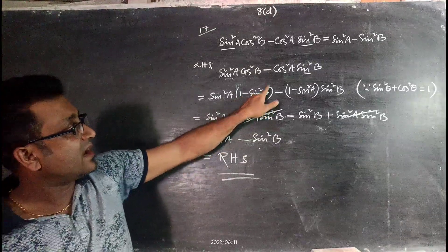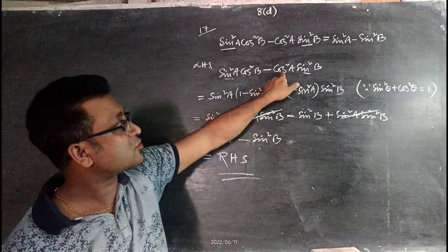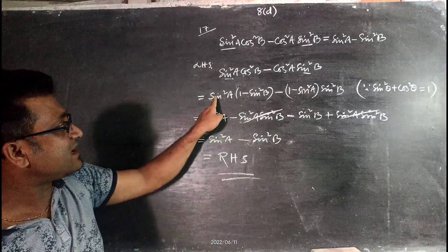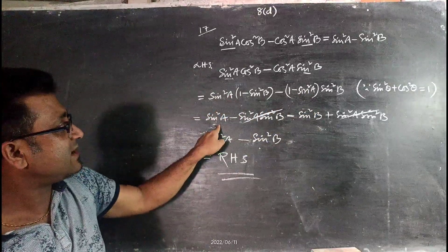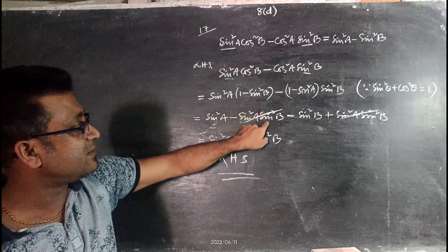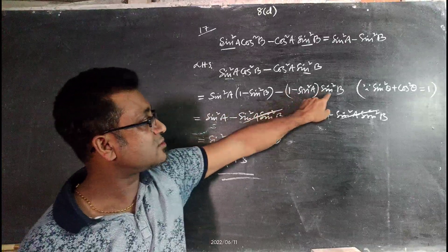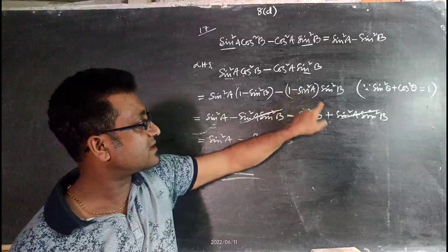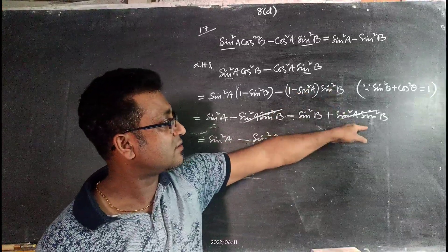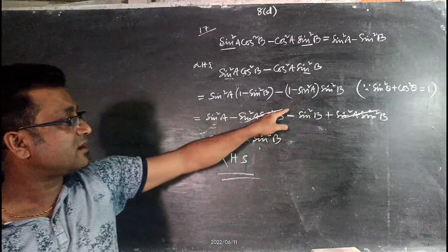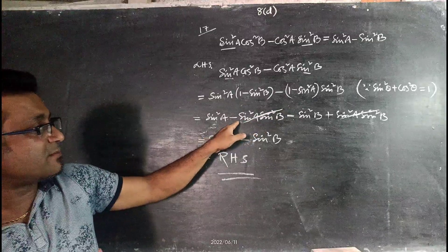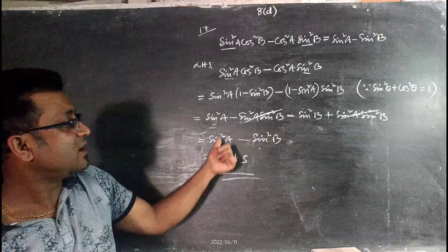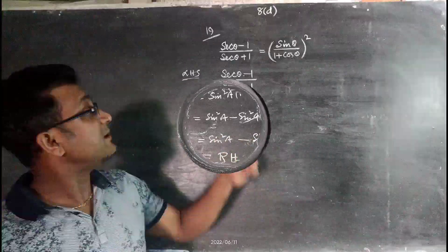Expanding: sin²A(1 - sin²B) - (1 - sin²A)sin²B = sin²A - sin²Asin²B - sin²B + sin²Asin²B. The sin²Asin²B terms cancel, leaving sin²A - sin²B, which is the required right hand side.